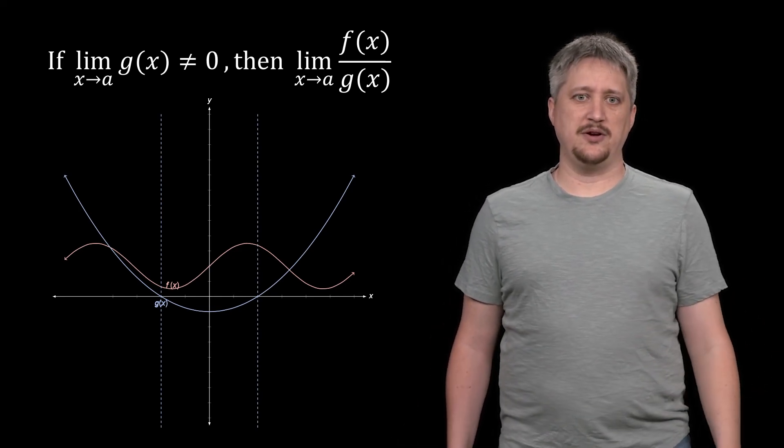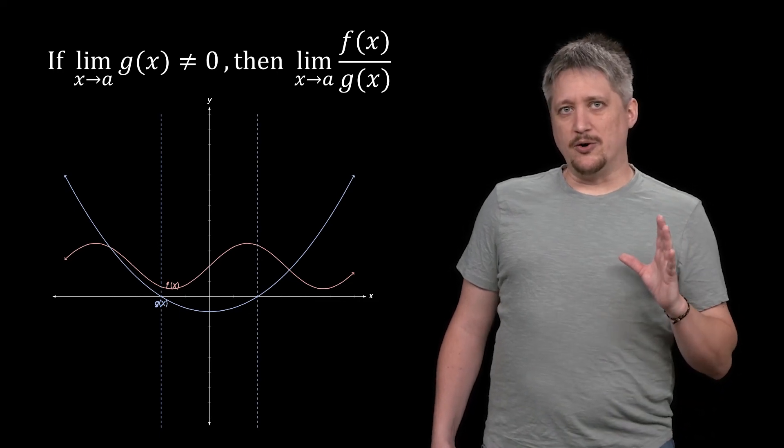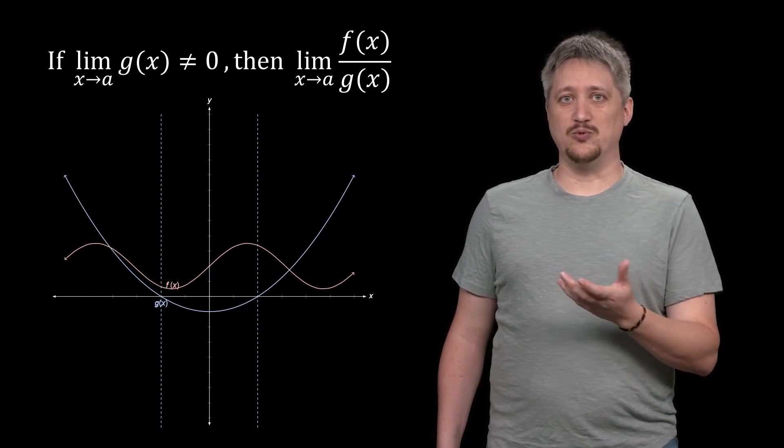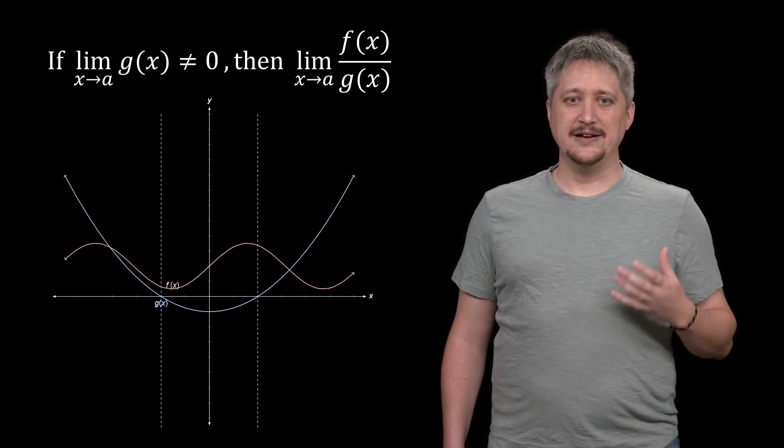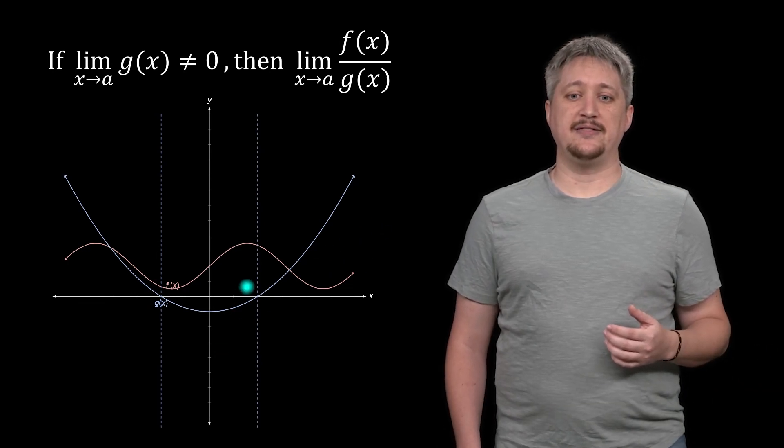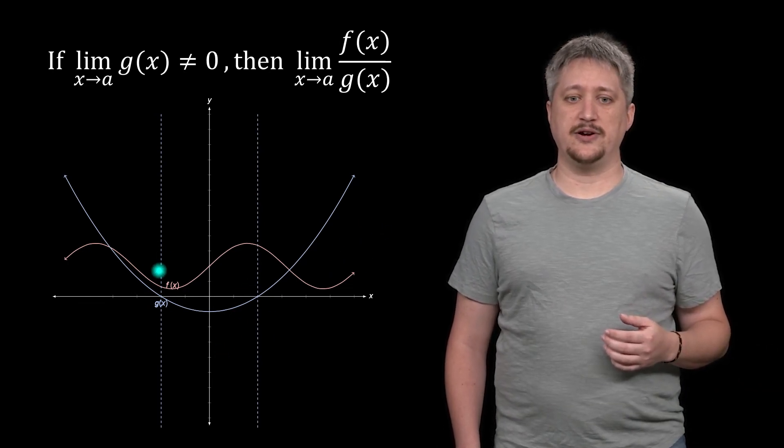This limiting question only really makes sense if we introduce this condition that the limit of g(x) has to be not zero. Because if it is zero, then we already can't make sense of f(x) over g(x), let alone the limit at those places.